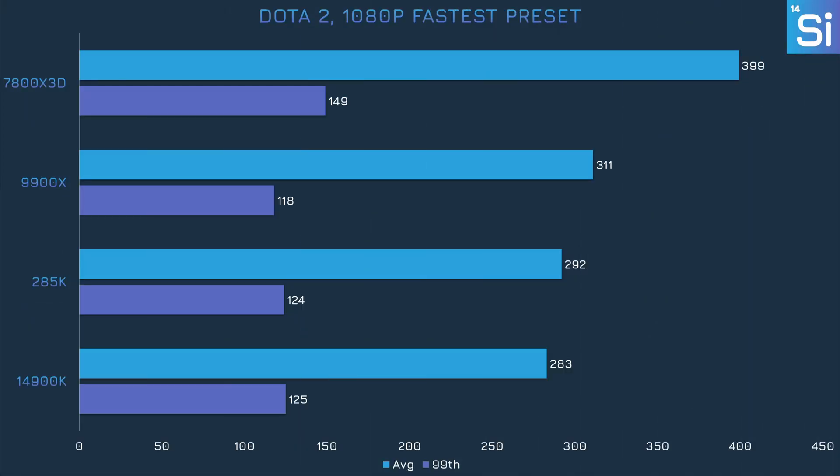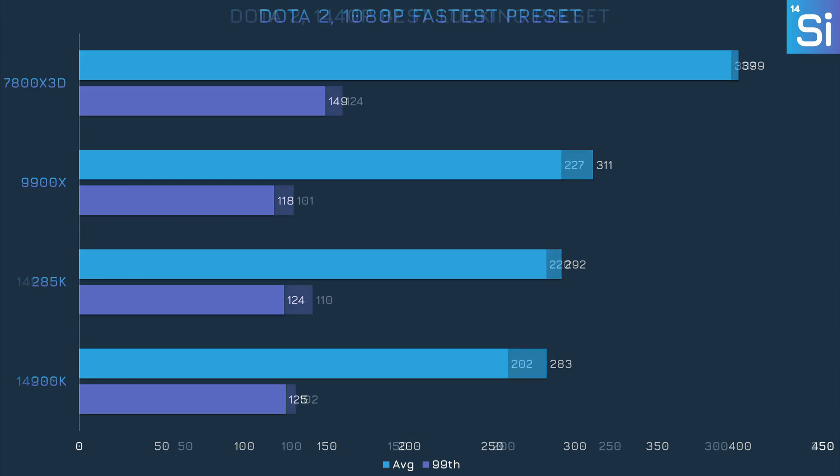In Dota 2, the 7800X3D just runs away with it, while the 9900X is in a distant second, ahead of the 285K and the 14900K. At least the 285K was the faster Intel CPU, but at 1440p with maximum graphics settings, the 285K slips to last place.